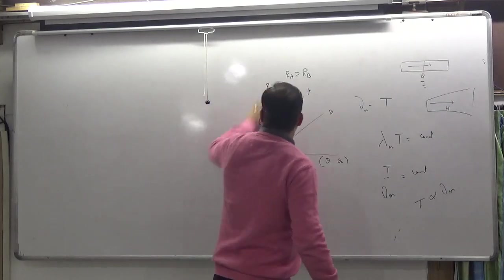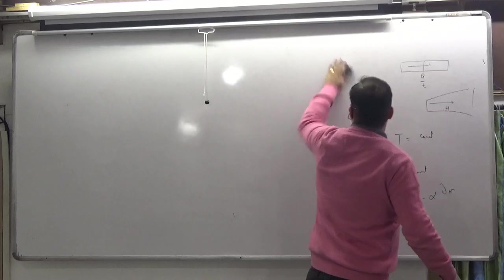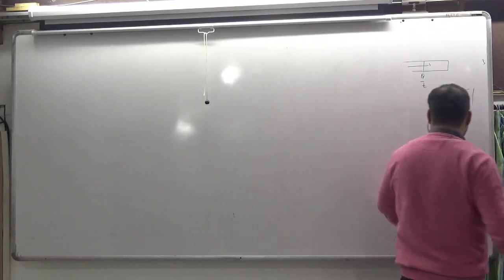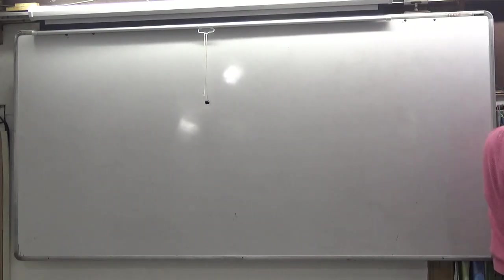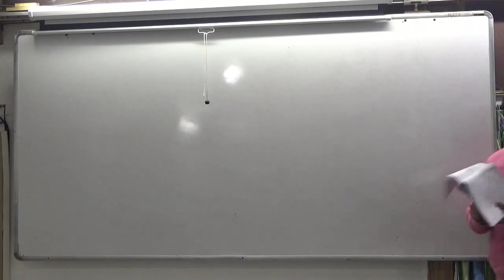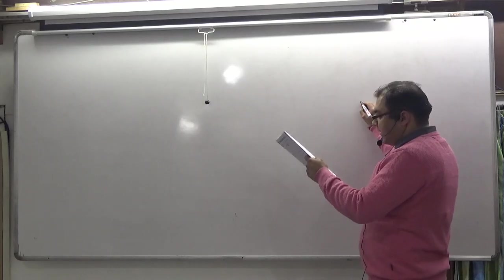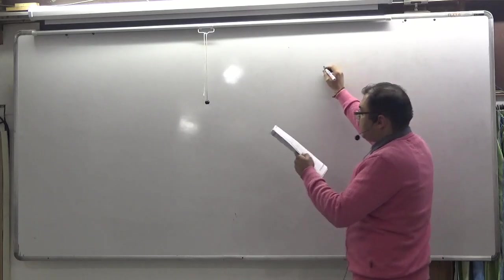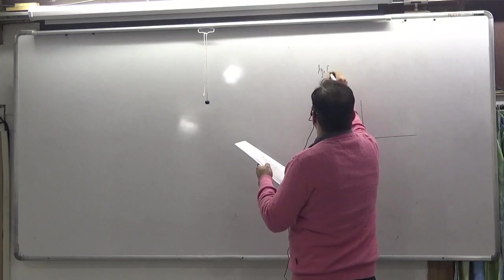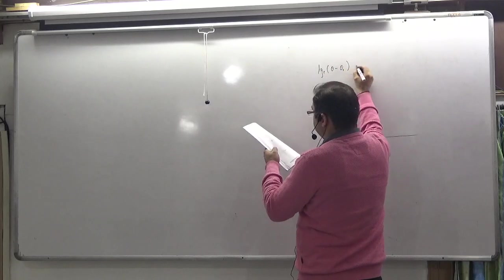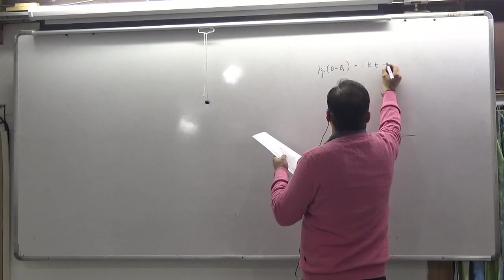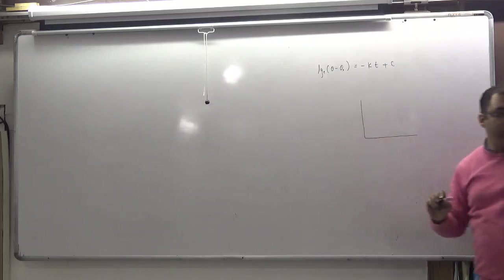Newton's Law of Cooling — we derived the result on page number 10: log of (theta minus theta-not) equals minus k·t plus c. This is a clear result.